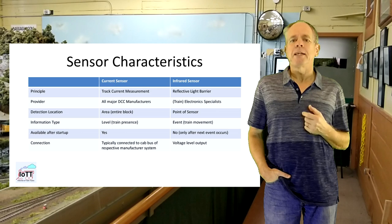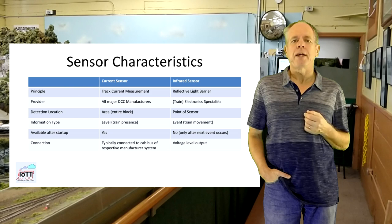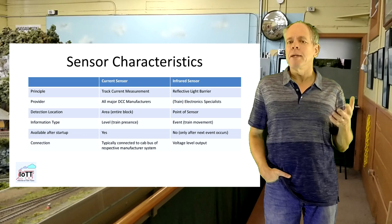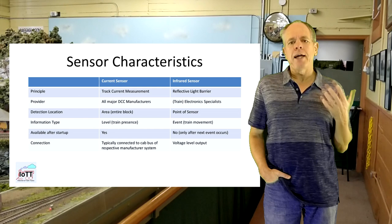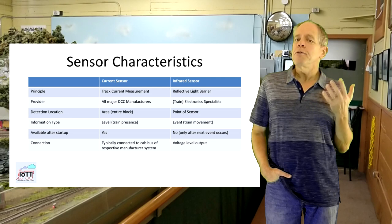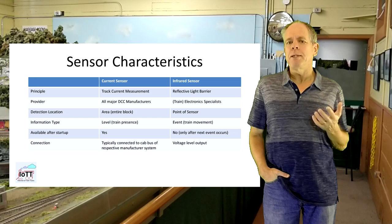The advantage of current-based occupancy detection is that you get status information as soon as rolling stock is placed on the track, and the occupancy information is available immediately after powering up. The disadvantage, on the other hand, is that you can't tell the exact location of a car within the detected section. And if you have a lot of rolling stock, the consumption of precious DCC current can be significant.